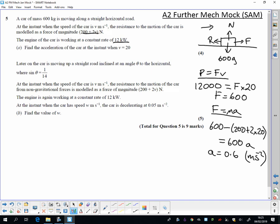OK, now it gets a little bit more complicated because now it's going up a slope. So now it's moving up a road in part B that is inclined at angle theta where sine theta is 1 over 14. Same car, same forces.